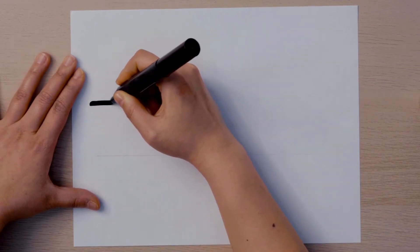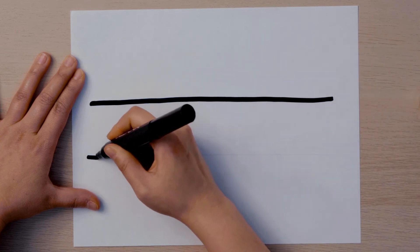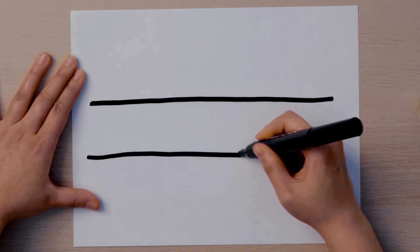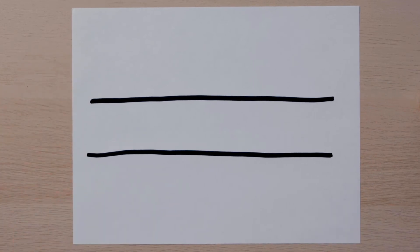First you will use your pencil to draw the outline of your pathway. I'll be using black markers so that you can see. Make sure the pathway is wide enough for your bot to fit inside. Here is the outline of my pathway.